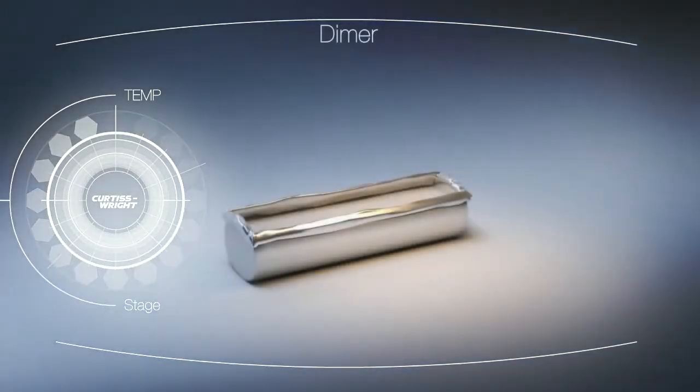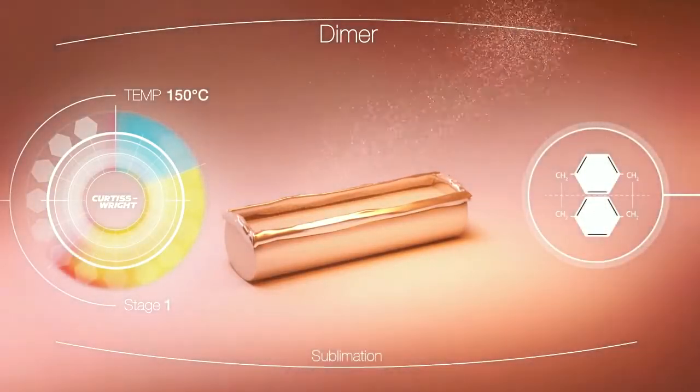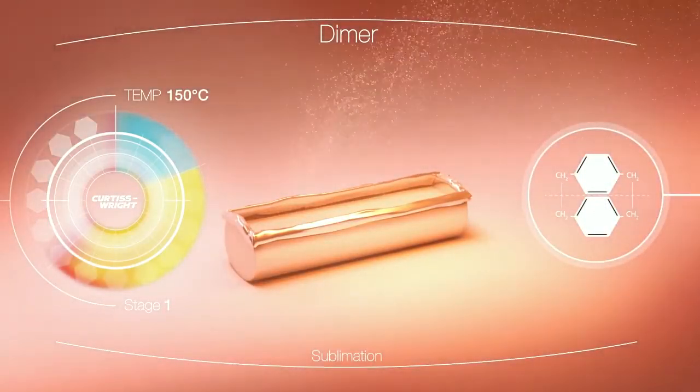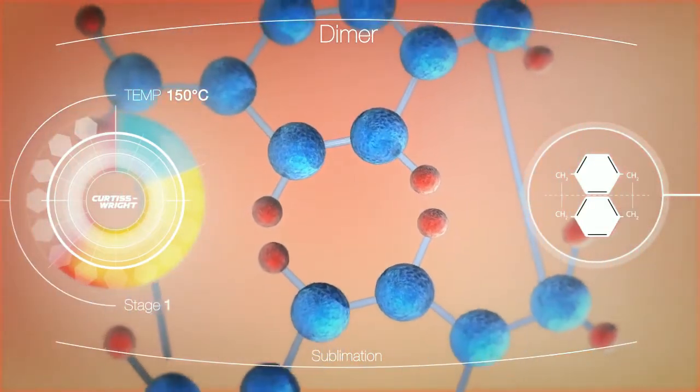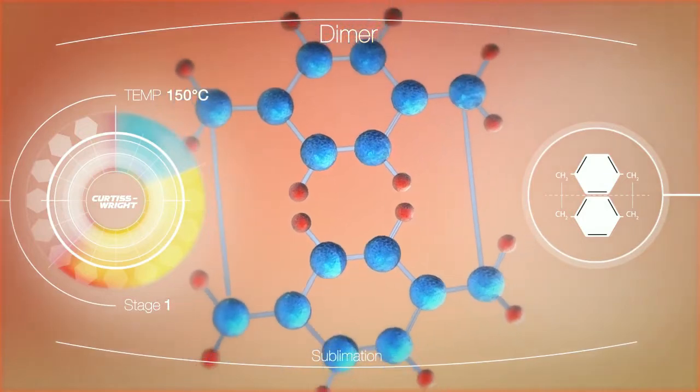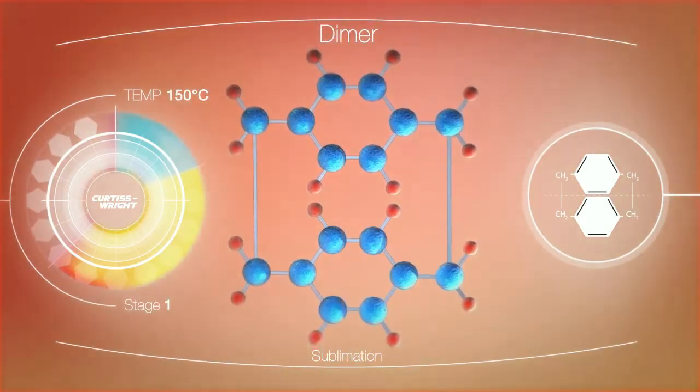The dimer is heated in a partial vacuum to approximately 150 degrees Celsius, resulting in conversion from a solid to a gaseous state. Coating thicknesses and uniformity are both dictated by the amount and purity of the dimer used. Our proprietary dimers are over 99.6% pure.